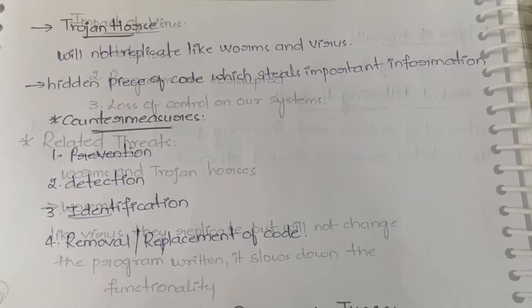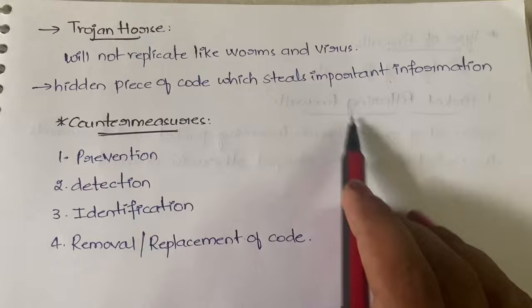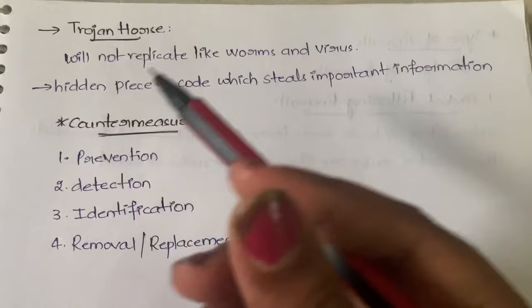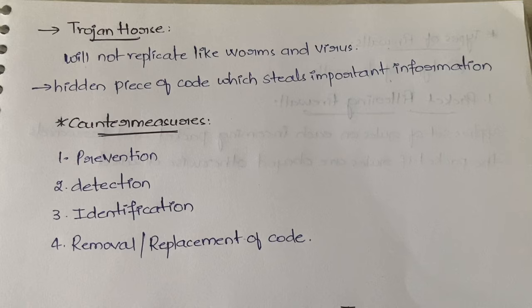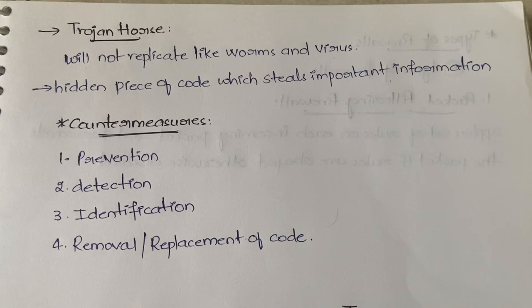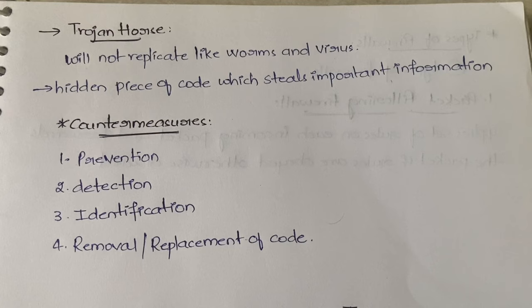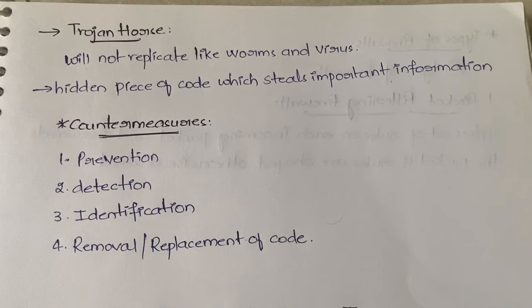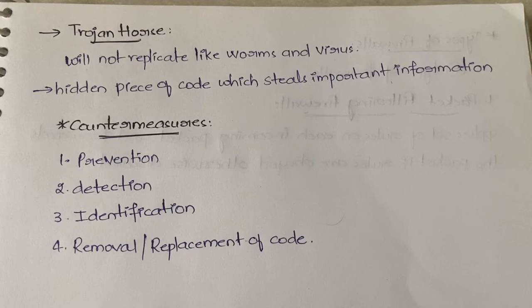A Trojan horse is different — it does not replicate like worms or viruses. Instead, it is a hidden piece of code that steals important information present in your system. To summarize: a virus replicates and changes functionality; a worm replicates but only slows down functionality; a Trojan horse does not replicate but steals important information.